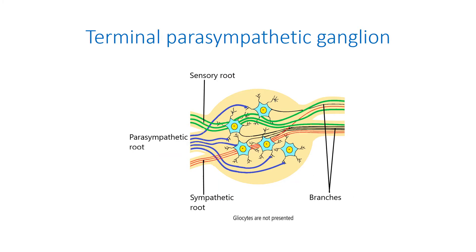Parasympathetic ganglia lie near or within the organs they innervate — terminal or intramural respectively. They also consist of multipolar neurons and satellite cells. Here, the preganglionic parasympathetic nerve fibers synapse with the postganglionic neurons. The neurotransmitter in the synapses of parasympathetic ganglia is acetylcholine.